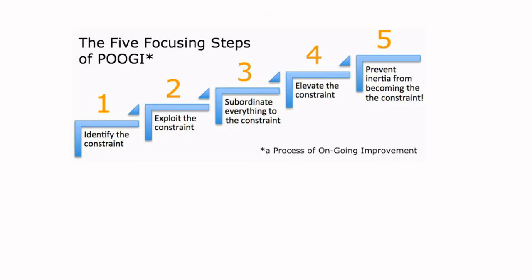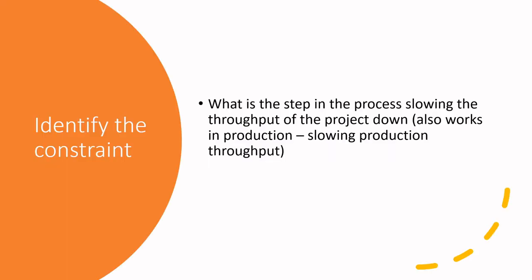We'll talk about resource planning in another slideshow. In the Theory of Constraints five focusing steps — there are five steps: identify the constraint, exploit the constraint, subordinate everything to the constraint, elevate the constraint, and prevent inertia from becoming the constraint. There's some background noise — I have a visitor in the room having cereal and emptying the dishwasher. The fun of working from home!